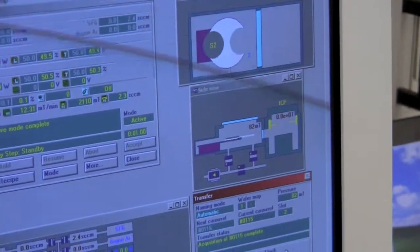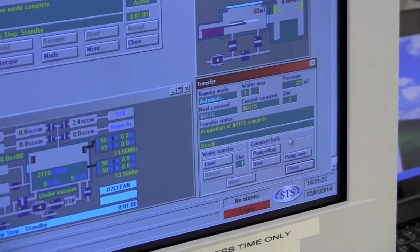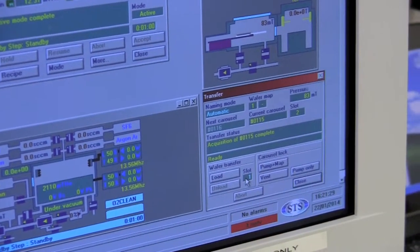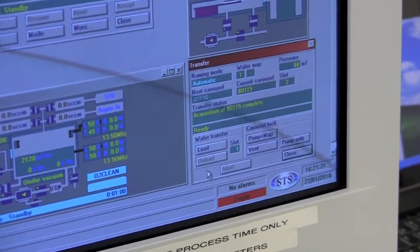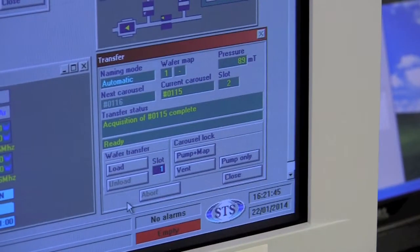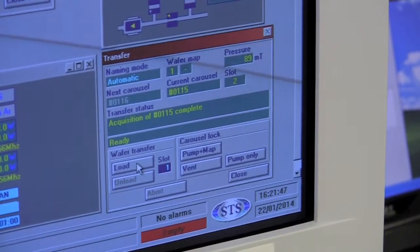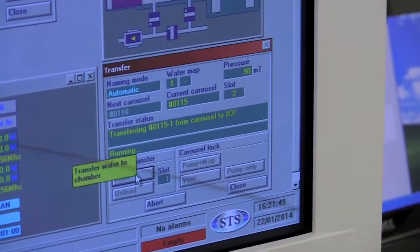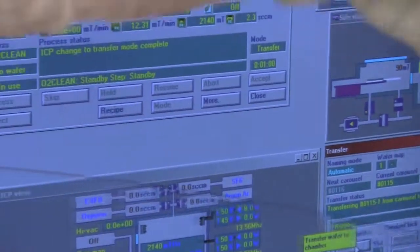We go to the transfer menu and because in this case, slot number one is already selected, we can just go ahead and press load. Once we select the proper slot, we press load, and you will see the carousel go inside the chamber to load the proper wafer.